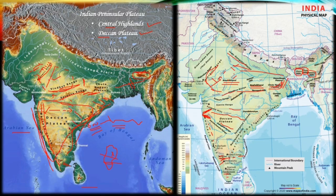The Western Ghats act as a barrier for the moist winds coming from the southwest, and orographic rainfall occurs on their western slopes. Orographic rainfall — also called relief rainfall — occurs when moist air rises over high land, cools as it ascends, and condensation of water vapor causes rainfall. However, on the opposite slopes (leeward side), rainfall does not occur.